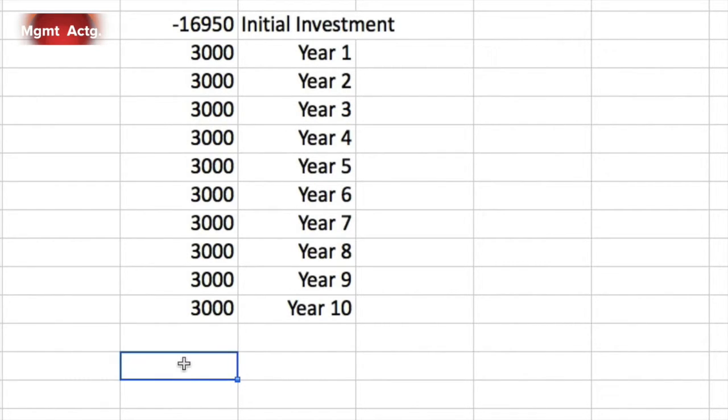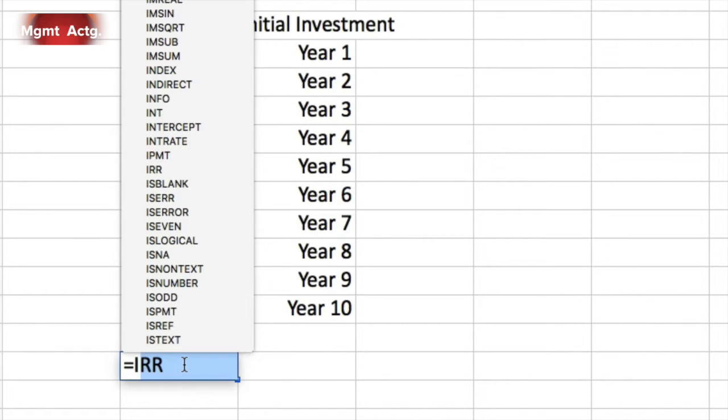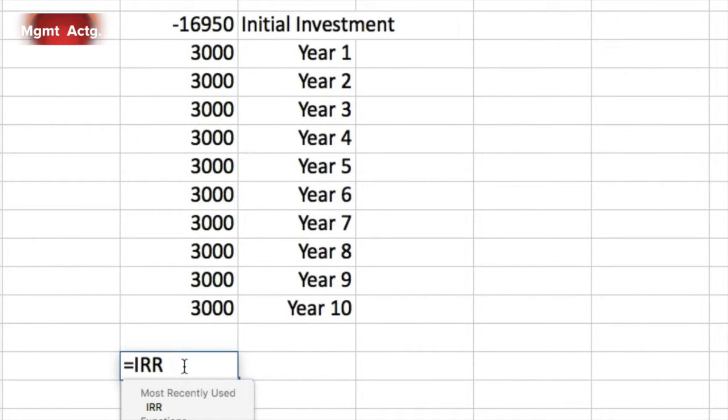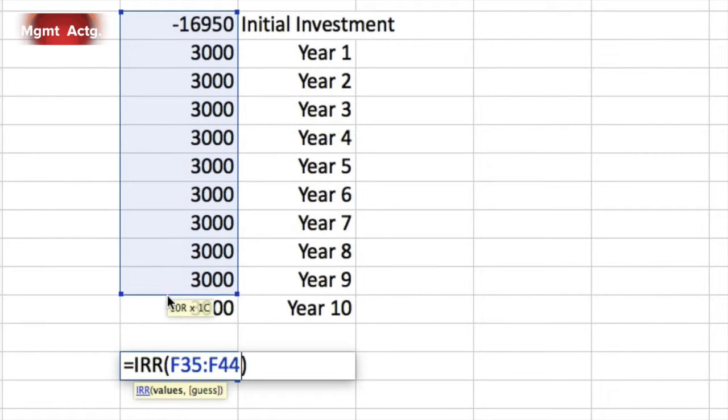So let's do this equals IRR. There's our internal rate of return function. Notice it says values and guess. So all you have to do is just move your mouse to the first cell, hold your mouse down, and drag to the bottom. So there's the values. Now, it needs a guess.